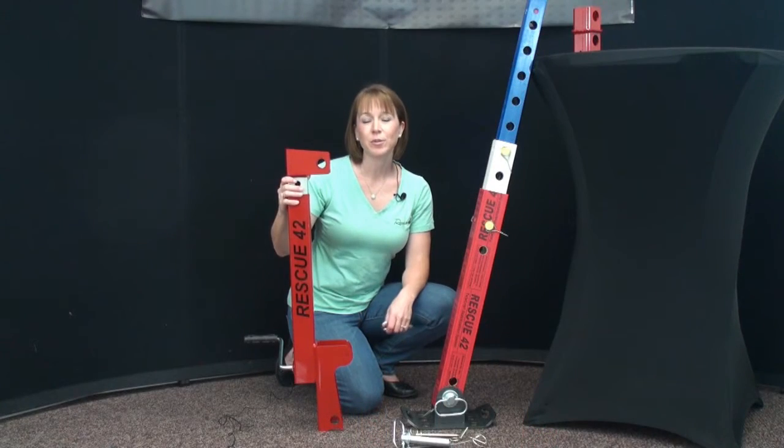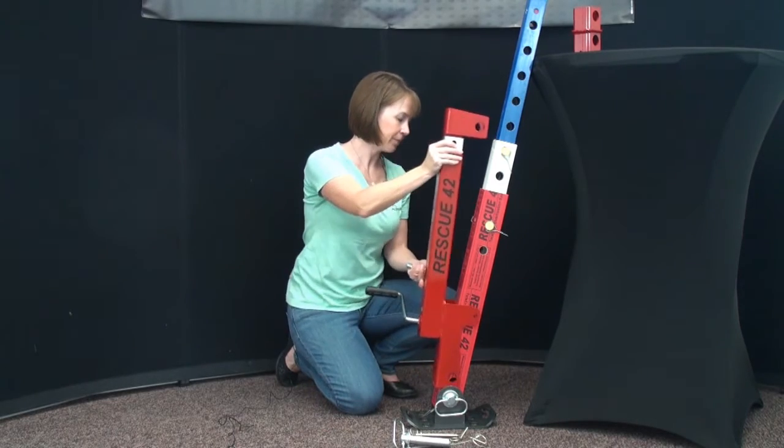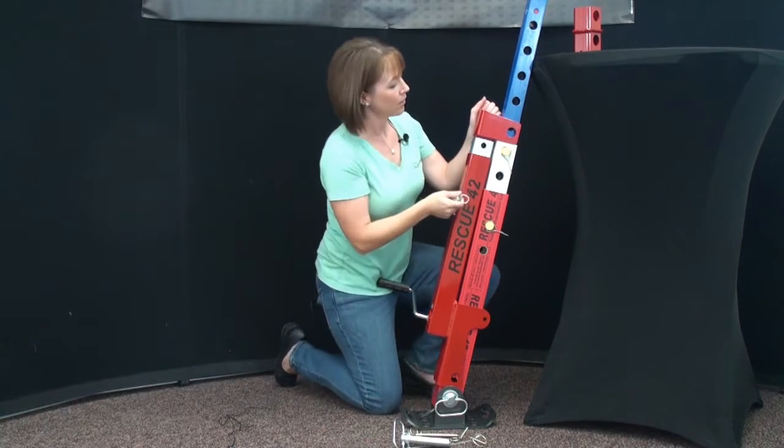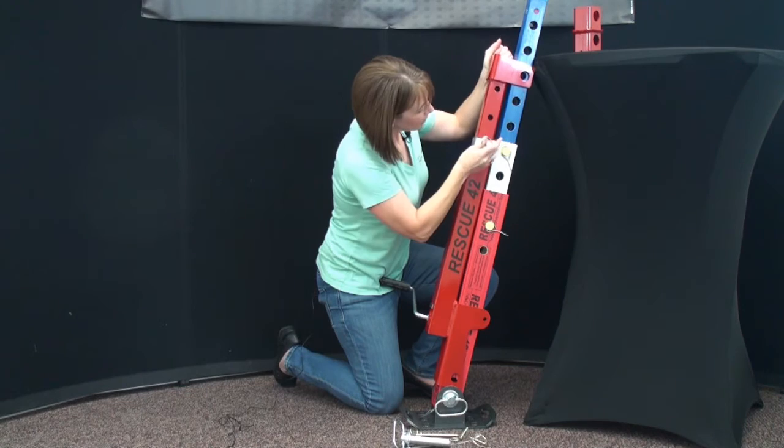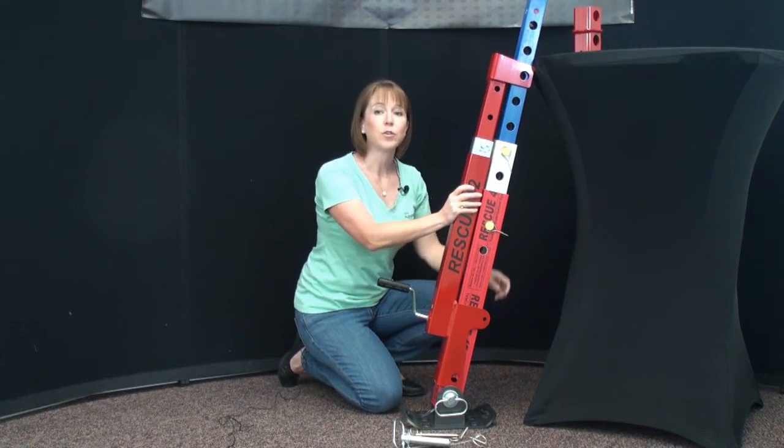To attach your Telecrib strut jack to a strut, simply lift it onto the base plate ears, adjust the lifting head so that it fits on the strut, and then insert your pins.